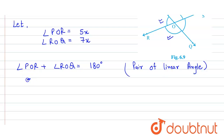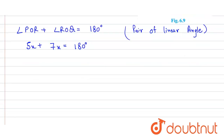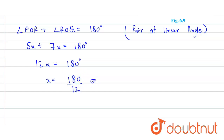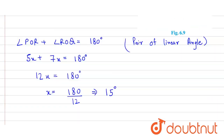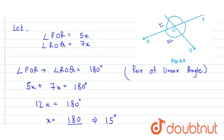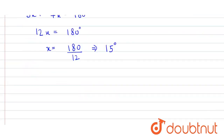So POR is 5x and ROQ is 7x, and their sum equals 180 degrees. Solving: 5x plus 7x equals 12x, and 12x equals 180 degrees, so x equals 180 divided by 12, which gives x equals 15 degrees.